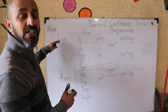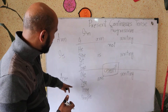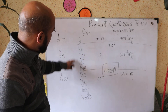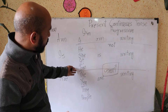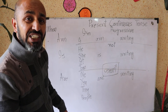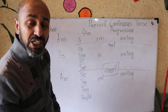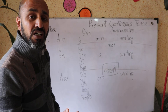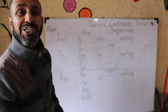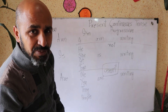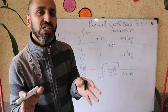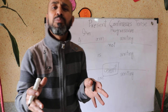We can make WH interrogatives the same way with plural subjects. For example: What are we writing? What are they writing? What are you writing? What are people writing today? Are they writing something specific? This is how you talk about them.